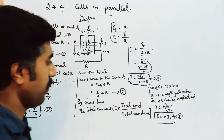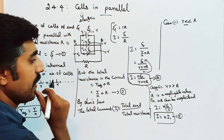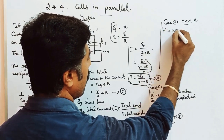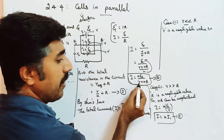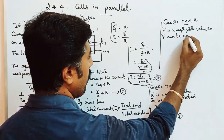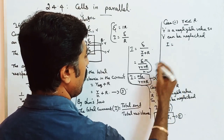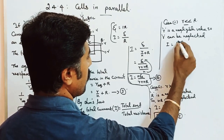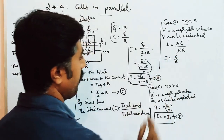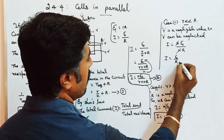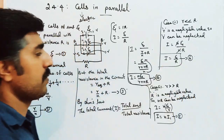Case 2: when the external resistance R is very much greater than the internal resistance r, the small r is a negligible value. So r can be neglected. Then I equals Nξ divided by NR, the N cancels, giving I equals ξ/R. This is equation number 6.